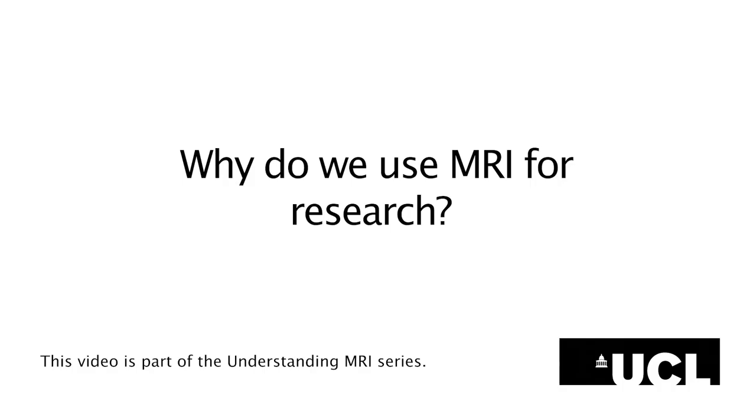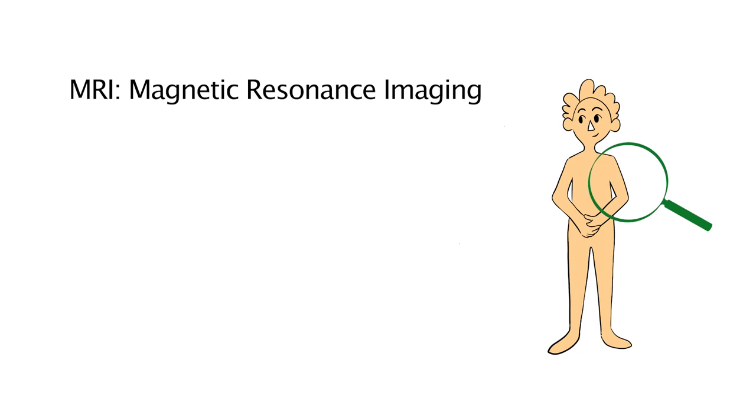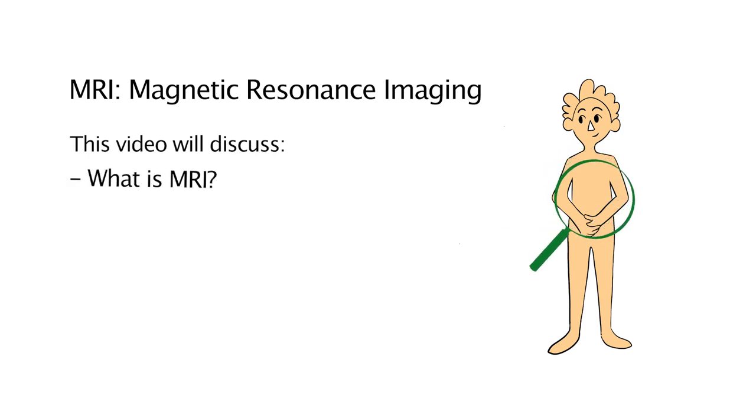Why do we use MRI for research? MRI, or Magnetic Resonance Imaging, is a method used to see inside the human body. MRI is commonly used in hospitals to scan people's heads or other parts of the body. In this video, we will discuss what is MRI, how does MRI work, and we will show some different uses for MRI.